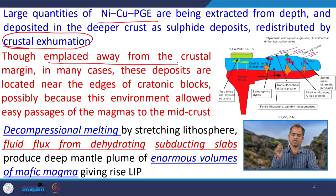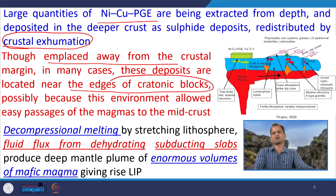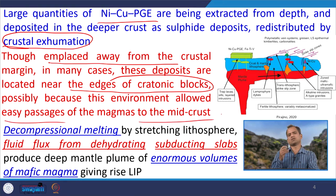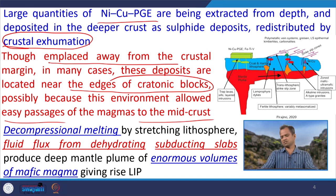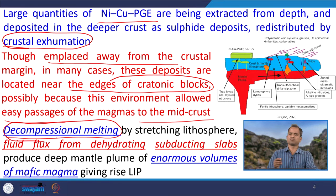Crustal exhumation is a tectonic process where part of the crust which was subsiding later comes near to the surface. When the deep crustal rocks that were formed at the deep crust come to the surface, this process is called exhumation. These nickel, copper, and PGE deposits were formed in somewhat deeper levels in the geological past and due to crustal exhumation they are coming to the surface. Though they are emplaced away from the crustal margin, in many cases these deposits are located near the edge of the cratonic block, because these are environments providing easy passage for magma to the mid-crust — these crustal boundaries are weak zones.